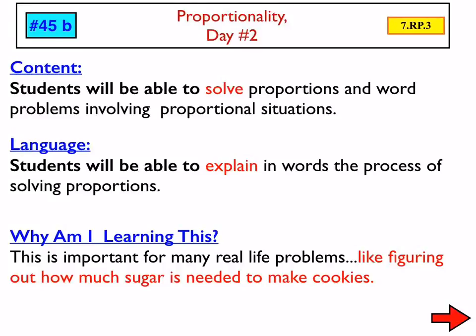Today, Lesson 45B, Day Number 2 of Proportionality. So far, our focus in this unit has been primarily about unit rates, rates, ratios, and then yesterday we added a new piece to this — proportionality. Two lessons ago, we talked about the idea of this new thing that we titled The Constant of Proportionality, which we can think of as a constant multiplier. And today, we continue with that idea of a constant multiplier.